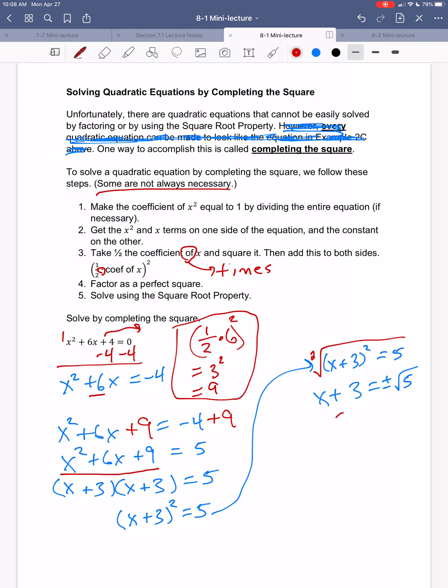So, now to solve, to get x by itself, I would subtract three from both sides. And, we get x equals negative three plus or minus the square root of five. So, my solutions are negative three plus the square root of five and negative three minus the square root of five.